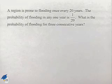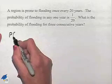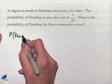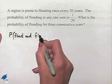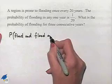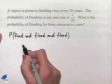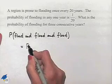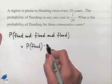for three consecutive years? So what we're trying to find is the probability of having a flood and a flood and a flood. This is going to be equal to the probability of having the flood multiplied times the probability